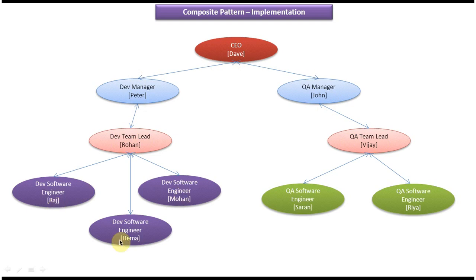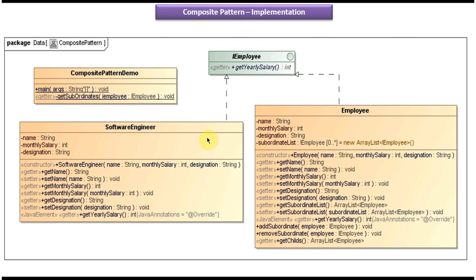Raj, Mogan, and Ema are three development software engineers working under Rohan. Sharon and Rhea are QA software engineers working under Vijay. This kind of tree structure is what we can create using the composite design pattern. We will see the class diagram for how to create this.